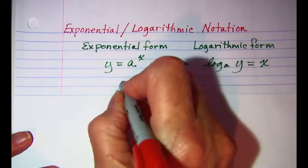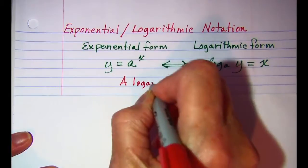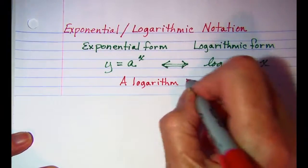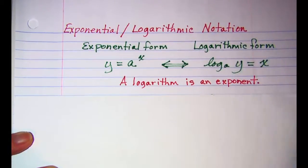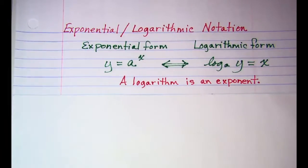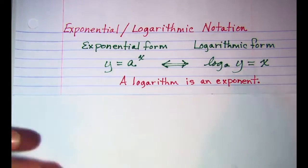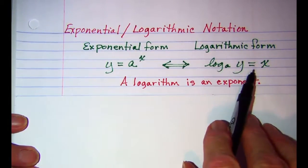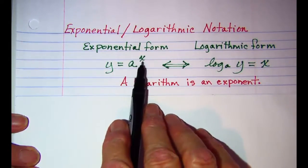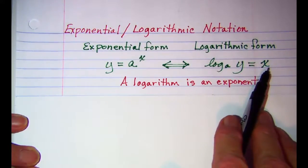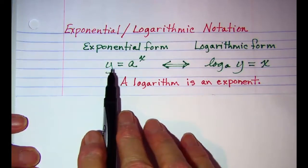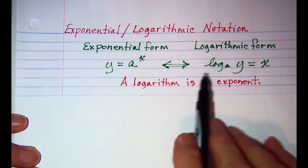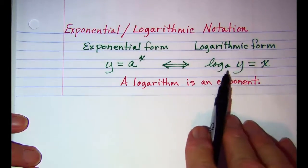Also remember that a logarithm is an exponent. So if someone asks you what is a logarithm, you can say a logarithm is an exponent. That helps us remember that our logarithm is equal to the exponent. The exponent on our exponential form is x, so the log is equal to x. And our argument of our logarithm is what the exponential is equal to. So when we have y equals a to the x, we can write it as the log of y base a equals x.